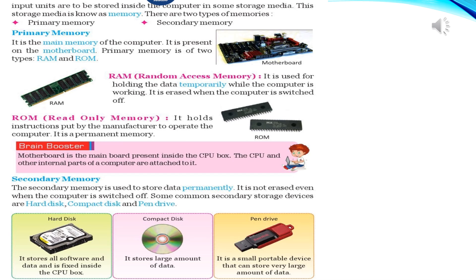Secondary memory: The secondary memory is used to store data permanently. It is not erased even when the computer is switched off. Some common secondary storage devices are hard disk, compact disk, and pen drive.